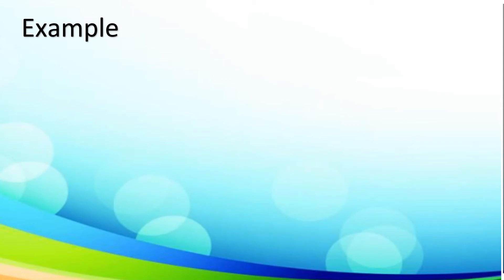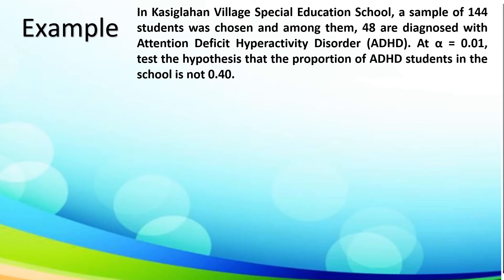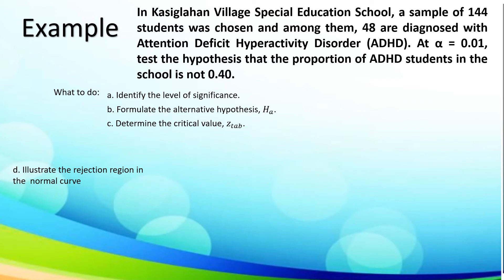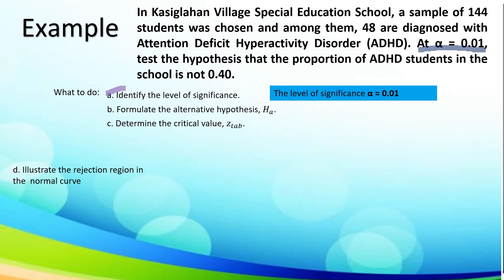Let us take another example. In Kasiglahan Village Special Education School, a sample of 144 students was chosen, and among them, 48 are diagnosed with attention deficit hyperactivity disorder, or ADHD. At alpha of 0.01, test the hypothesis that the proportion of ADHD students in the school is not 0.40. We will: identify the level of significance as alpha equal to 0.01, and formulate the alternative hypothesis. Given the keyword not 0.40, the alternative hypothesis is P is not equal to 0.40.